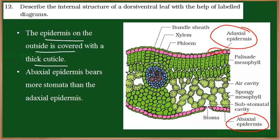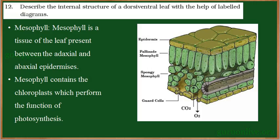On the lower surface as well as upper surface there is a presence of stomata. Stomata are the minute pores through which transpiration takes place. Majorly stomata are found on the lower surface; they are also present on the upper surface but the number is less. The cells between the upper and lower epidermis are called mesophyll.